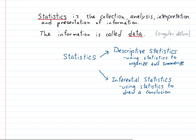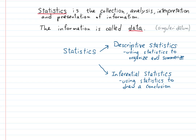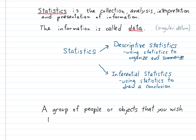Now, more key terms. These are very important — I'm going to say the next four together and then define them: population, sample, statistic, and parameter. You need to know what they mean and, very importantly, not get them confused with each other. A group of people or objects that you wish to study is called a population.